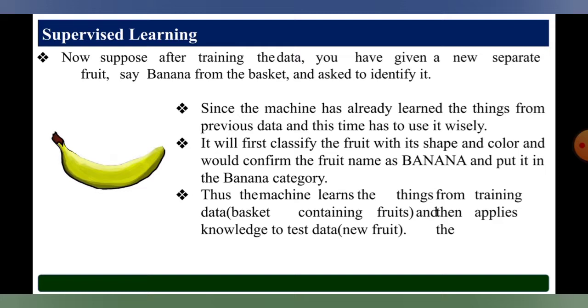Since the machine has already learned things from the previous datasets, this time it will use it wisely. It will first classify the fruit with its shape and color and would confirm the fruit name as banana and put it into the banana category. Thus the machine learns things from the training data or basket set containing fruits and then applies the knowledge to test data, the new fruit.